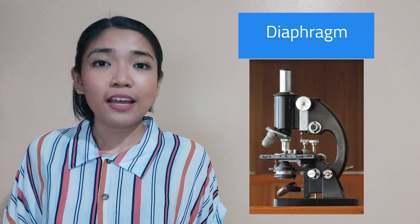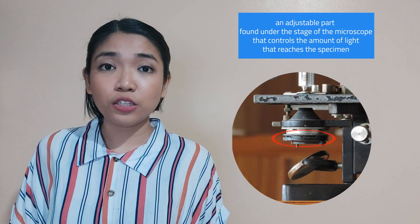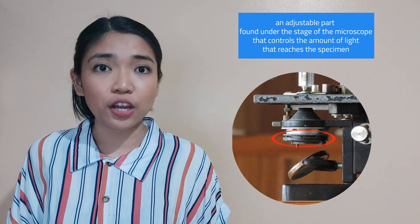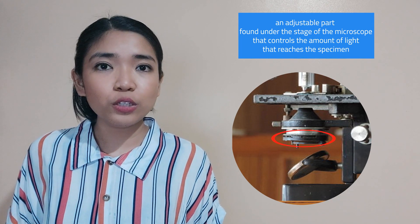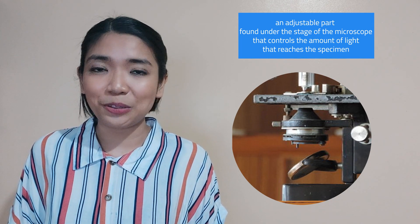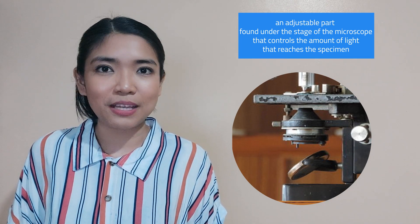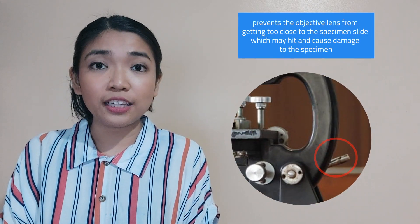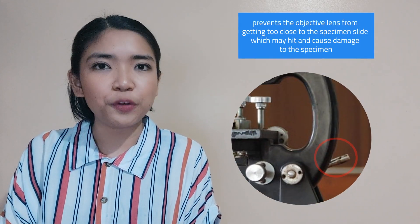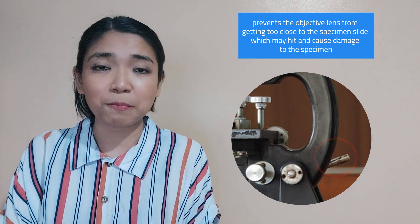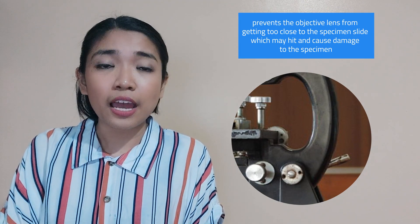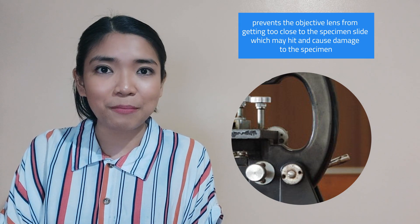Diaphragm: it is an adjustable part found under the stage of the microscope that controls the amount of light that reaches the specimen. Rockstop: it prevents the objective lenses from getting too close to the specimen slides, which may hit and cause damage to the specimen.